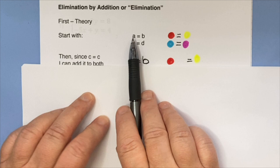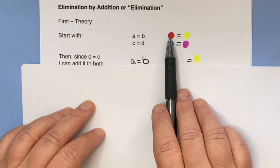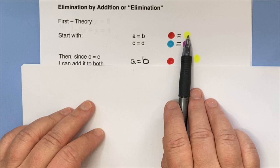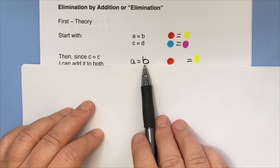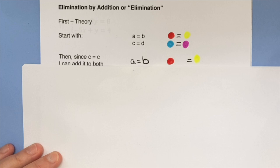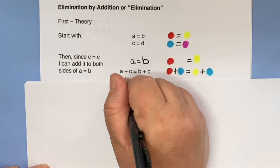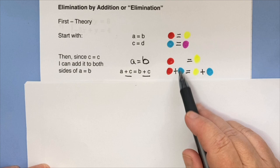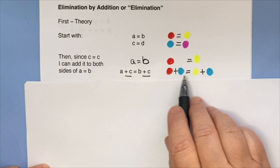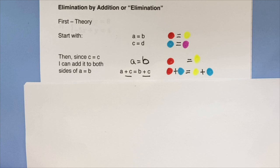Here's a basic rundown of what's going on behind the scenes. I'm going to start with two equations, A equals B and C equals D. Here I'm representing these with colors in case that's easier. A is red, B is yellow, C is blue, D is purple. So let's start with A equals B, so red equals yellow. Now what I'm going to do is I'm going to say C can be added to both sides.